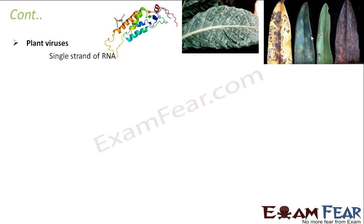Plant viruses consist of a single strand of RNA. You would have often seen viral diseases in plants, such as potato spindle disease. There is also a disease known as mosaic disease, caused by the mosaic virus, which makes the leaves look discolored and patchy. So plant viruses consist of RNA — specifically a single strand of RNA.